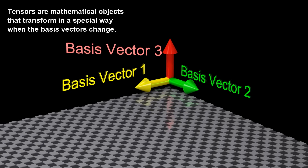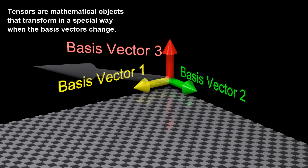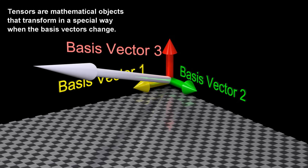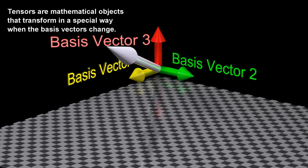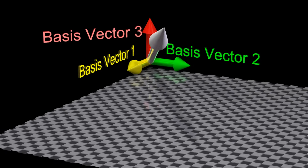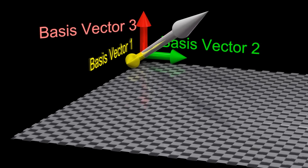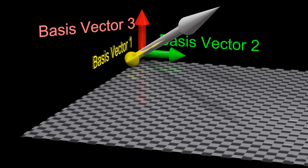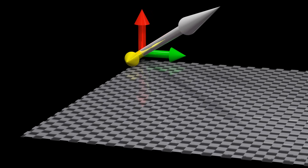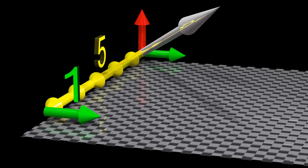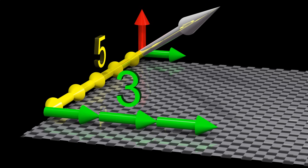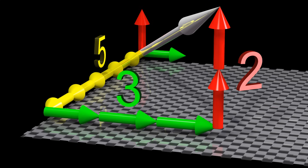Tensors are mathematical objects that transform in a special way when the basis vectors change. Understanding tensors is fundamental to understanding the curvature of space-time in Einstein's general relativity.